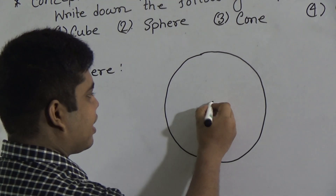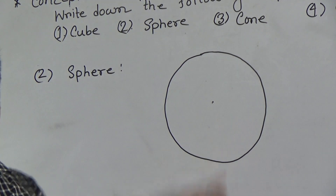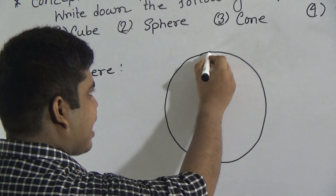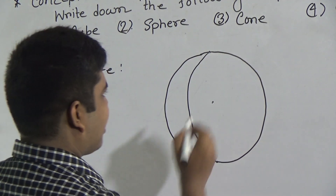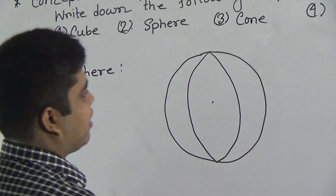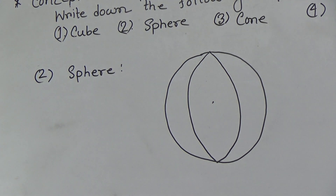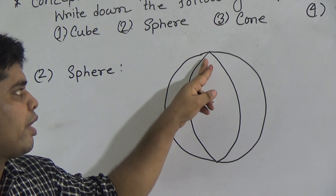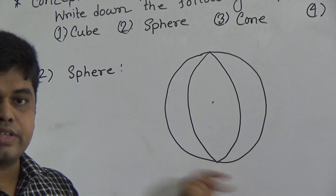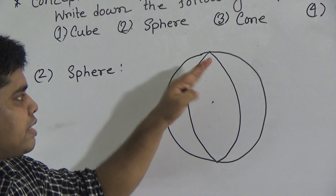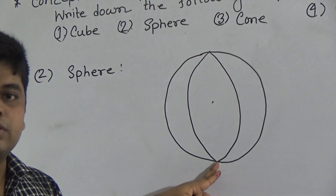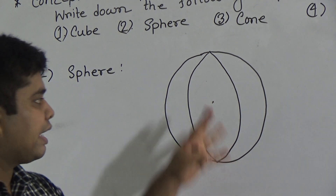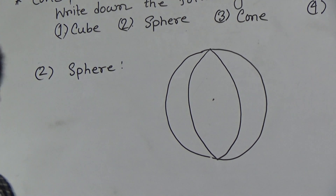My dear students, this is a circle, but this is not a sphere yet. Now we give a point here and a point here, then we add a curved line and again we draw another curved line. At first you draw a circle, after that you take two points — one above the circle and another below — and we draw two curved lines from above to below the circle.